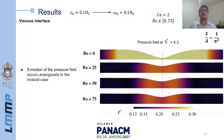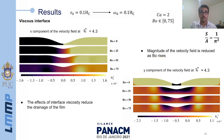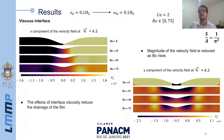Here we have the pressure fields for four values of the Boussinesq number, evaluated at t equals 4.3, which is the rupture time of the inviscid interface case. The pressure distribution is similar across cases with considerable interface viscosity. The x and y components of the velocity field at t equals 4.3 are shown for four Boussinesq number values. The left figure shows that increasing interface viscosity leads to a reduction in the drainage velocity. The right figure shows that interface viscosity reduces the velocity of attraction between the free surfaces, indicating that interface viscosity opposes the effects of the van der Waals forces.